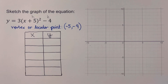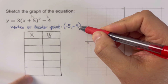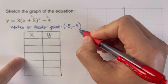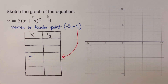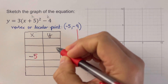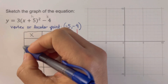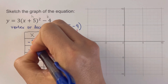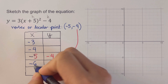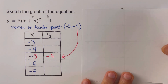We place the vertex in the middle of the table: x = negative 5 and y = negative 4. Moving to the right: x = negative 4, then negative 3. Moving to the left: x = negative 6, then negative 7. Now we calculate the y-values for each of these x-values using the equation.